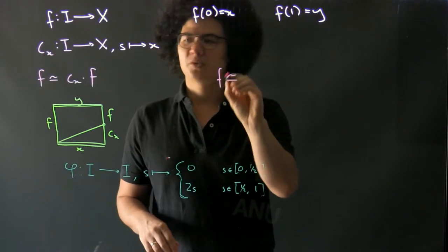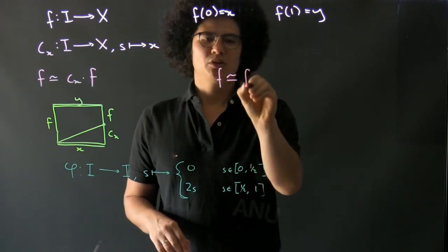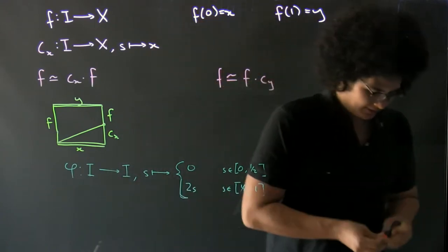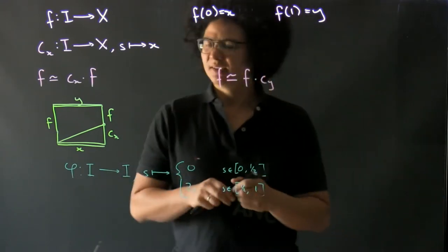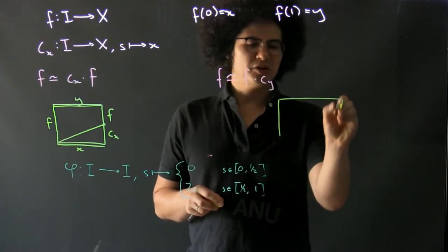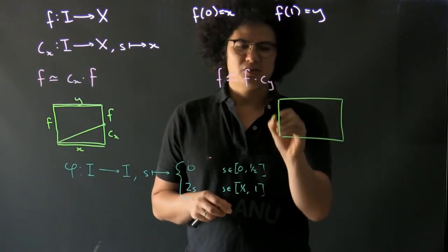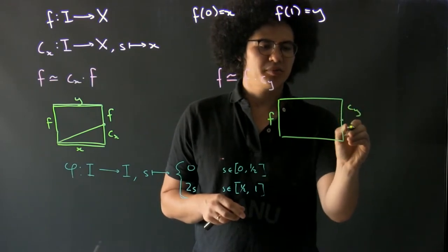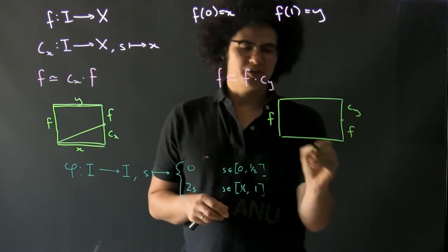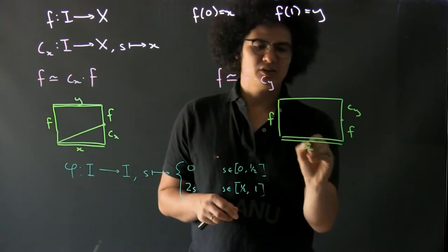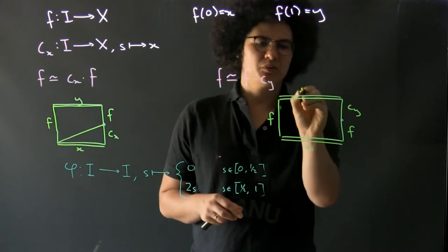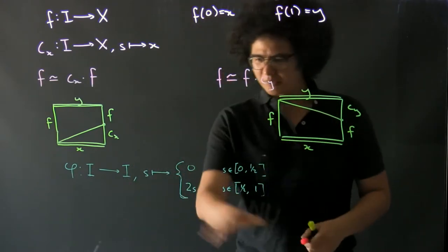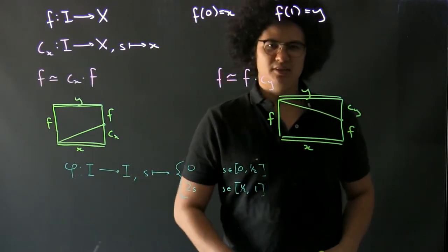Similarly, we can see that f is homotopic to f composed with the constant map at y. We've just taken a mirror image of this homotopy: we have f still here but now we have the constant part on top, f on the bottom, this is still y here, x here, this is still y, but now our homotopy looks like that. We get it from a similar reparametrization.